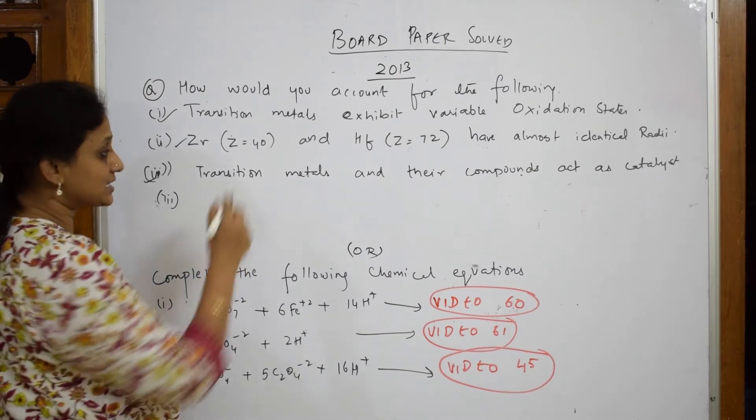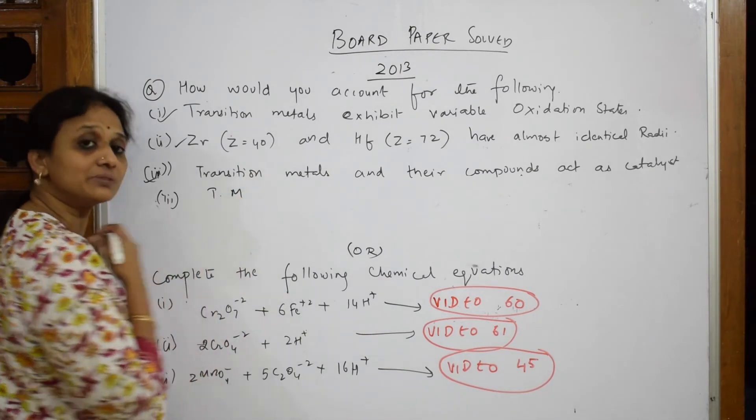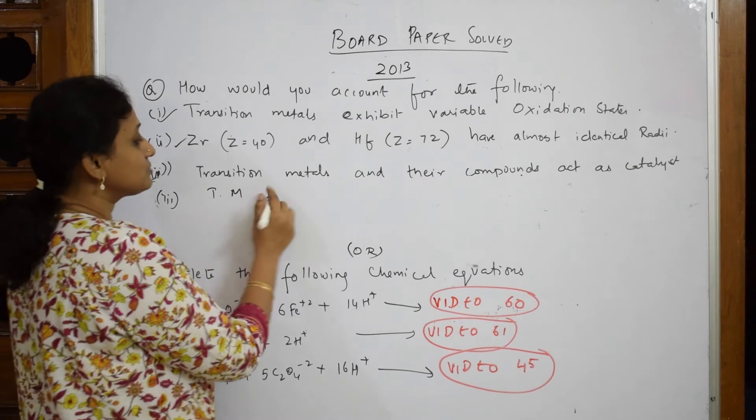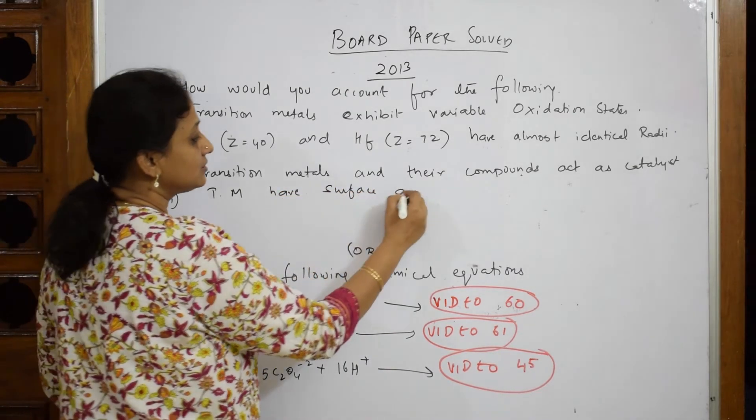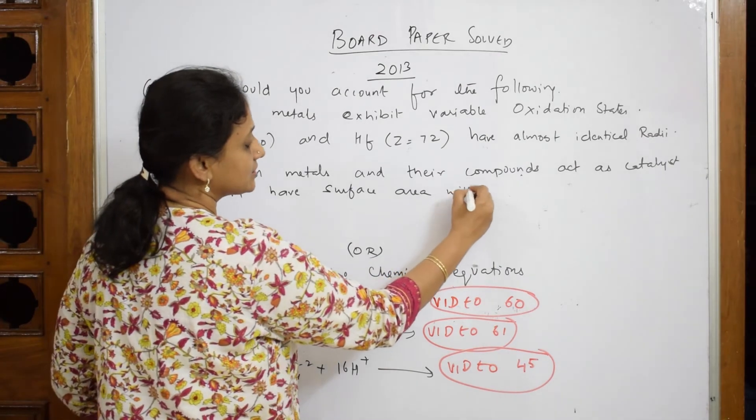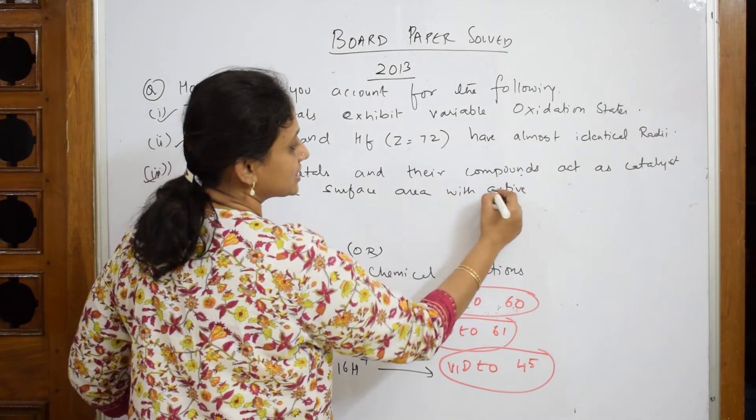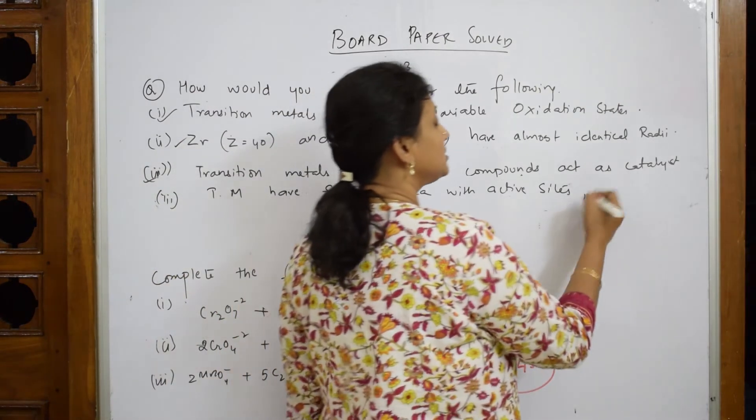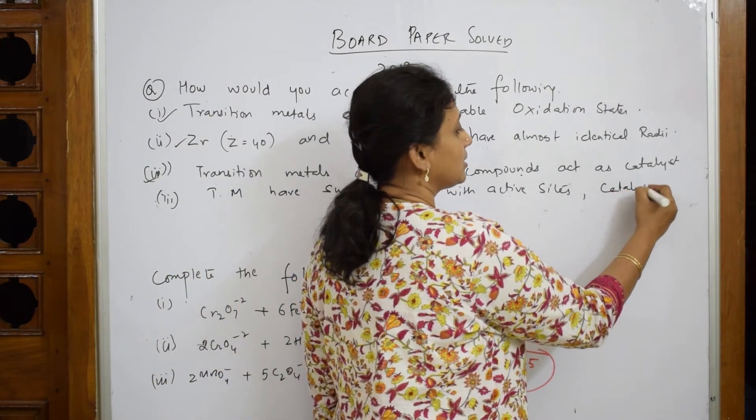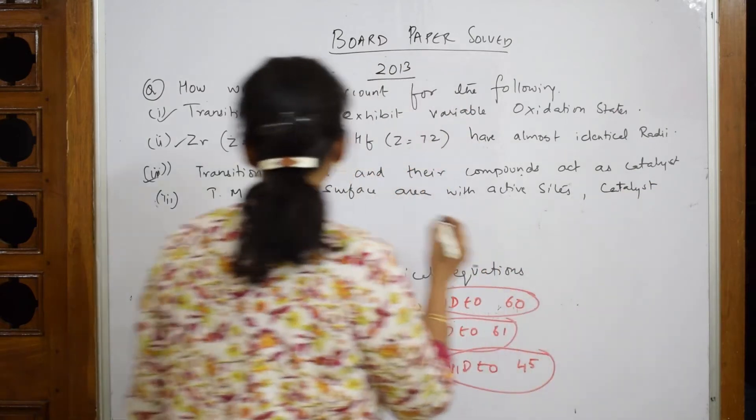Listen. That active site where your reactant will go and adhere and form a complex with the catalyst, and further it forms the products without catalyst being consumed. So first important thing, transition metal elements, why do they act as catalysts? Because transition metals have surface area with active sites. Now to this active sites what are going to come and adhere? It is the reactant.